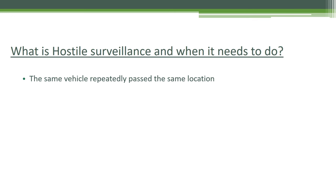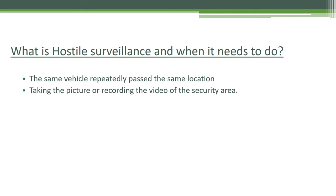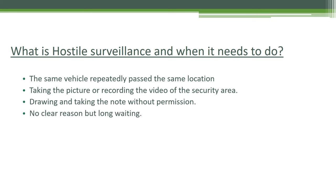If a vehicle passes the same location repeatedly, it can be suspicious and you must conduct hostile surveillance. Number two, taking pictures or recording video of the security area — whether visitor, vendor, or employee, if they are photographing or recording the security area, the CCTV operator must conduct hostile surveillance. Number three, drawing or taking notes without permission — most companies do not allow drawing or note-taking at particular locations or relating to any items.